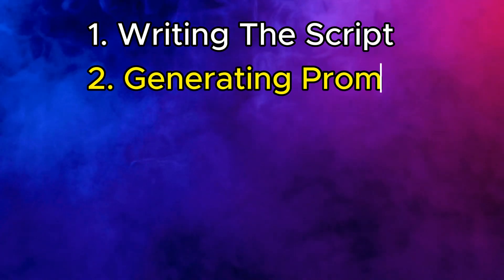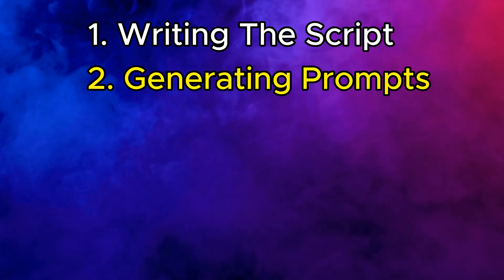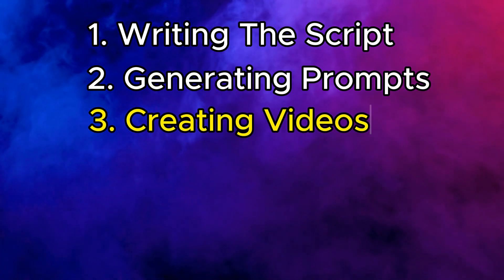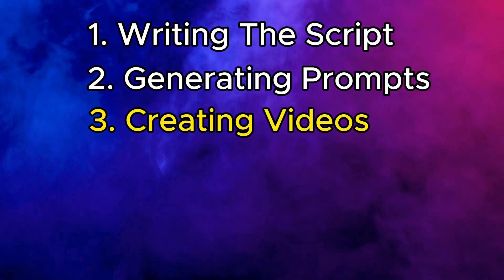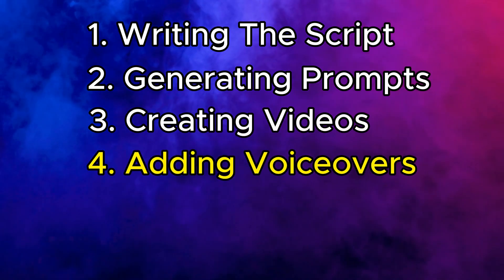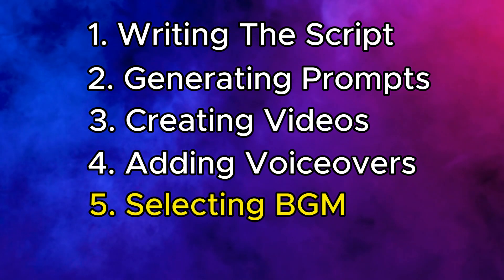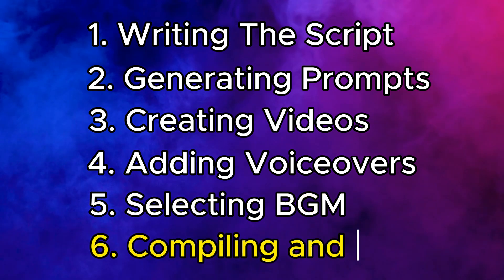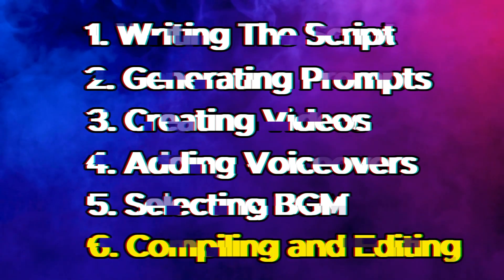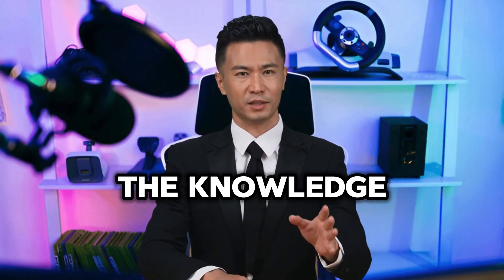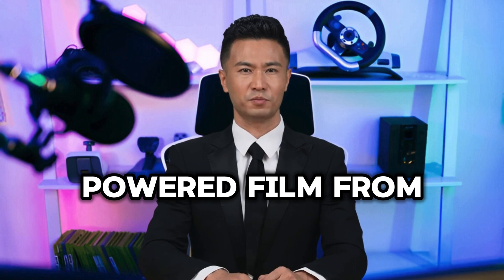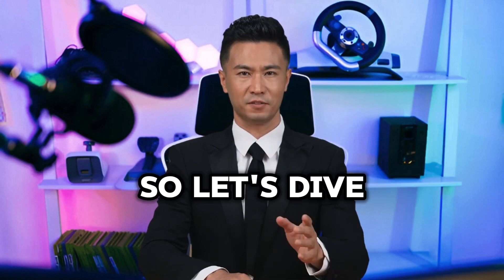This tutorial covers the entire process from start to finish. We'll start by writing a script using AI — this is the backbone of our film. Then we'll use AI to generate visual prompts based on the scenes in the script. Next, we'll create videos from those text prompts using an amazing tool. After that, we'll add a lifelike voiceover, find the perfect cinematic background music, and finally compile and edit everything into a polished, monetizable film. By the end of this video, you'll have all the knowledge you need to create your own AI-powered film from scratch.